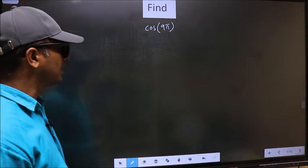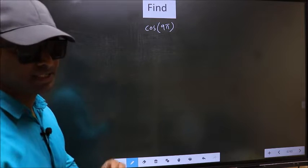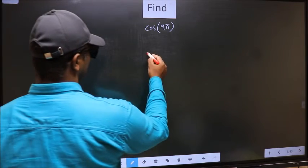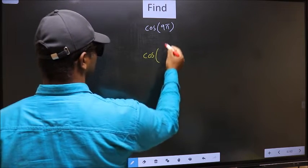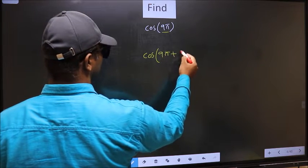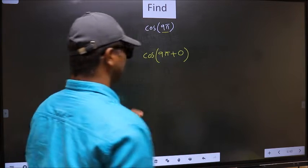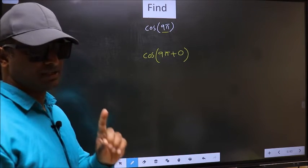Find cos 9π. To find this, what we should do is see cos in place of 9π. Now you should write 9π plus 0. This is your step 1.